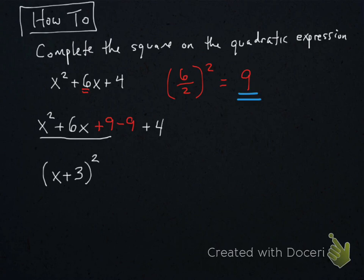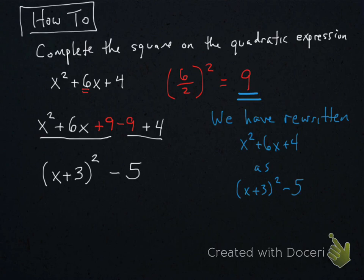And the reason we needed 9 is because x squared plus 6x plus 9 is a perfect square. We tack on that minus 5, and then we will find that we have rewritten x squared plus 6x plus 4 as x plus 3 quantity squared minus 5, which is almost a perfect square.